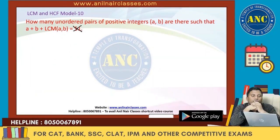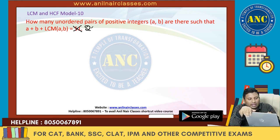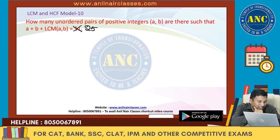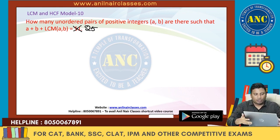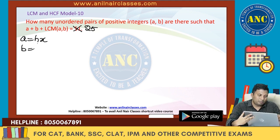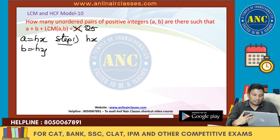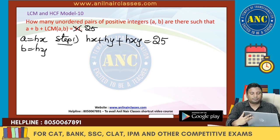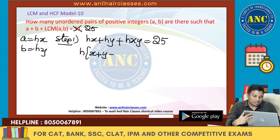With another value — listen carefully — I am taking 25. Everybody is saying repeat, so probably I need one more explanation with a different number. A plus B plus LCM of AB is 25. A is HX, B is HY. Step number 1: HX plus HY plus HXY is equivalent to 25, which is H into (X plus Y plus XY) equivalent to 25.